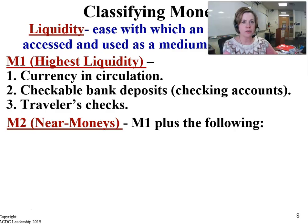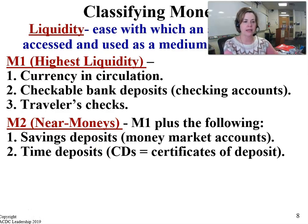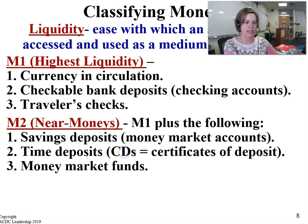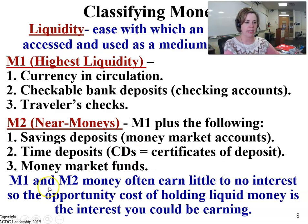The M2 classification of money includes everything outlined in M1, but also includes money in savings deposits, certificates of deposit (CDs), and money market funds. The M1 and M2 money often earn very little interest, so the opportunity cost of holding liquid money is the interest that you could be earning.